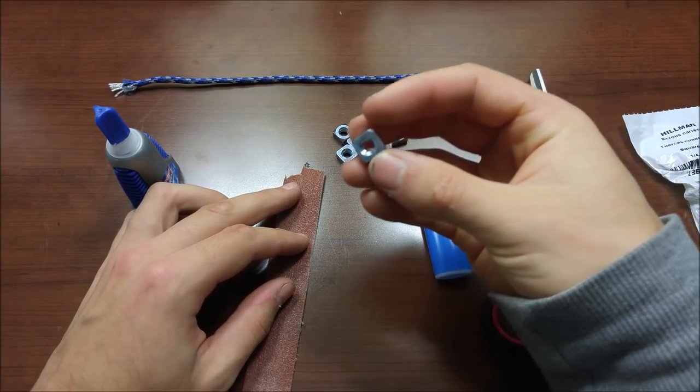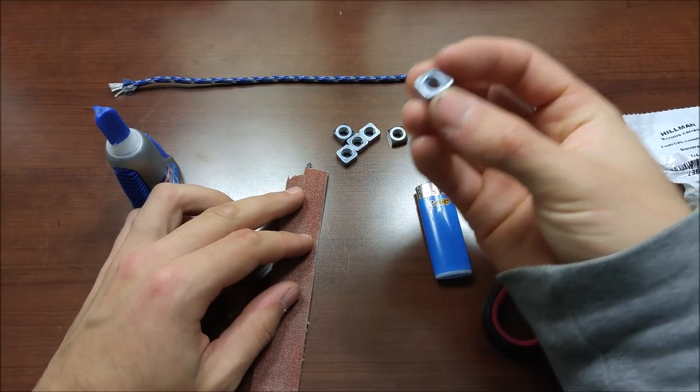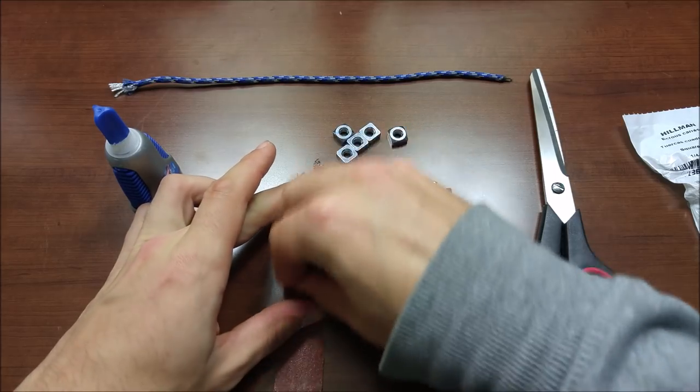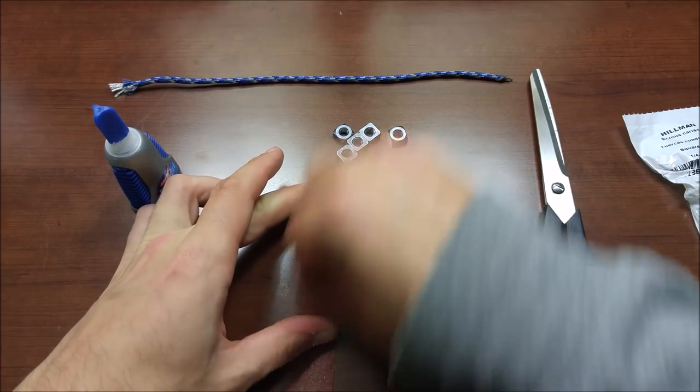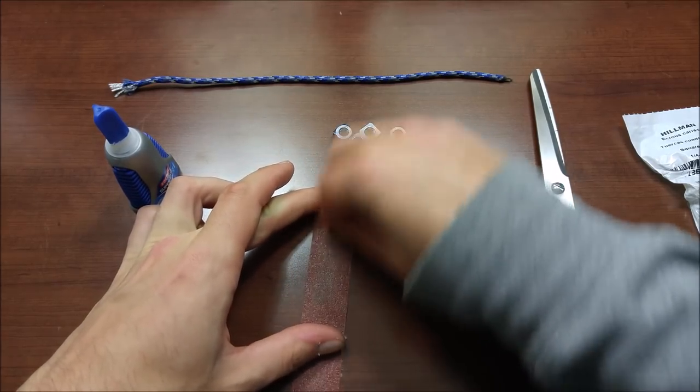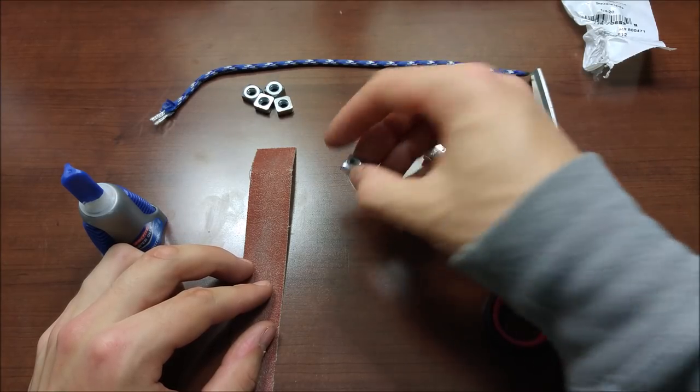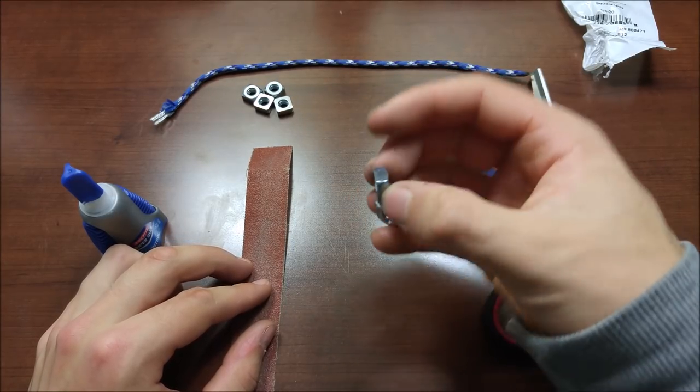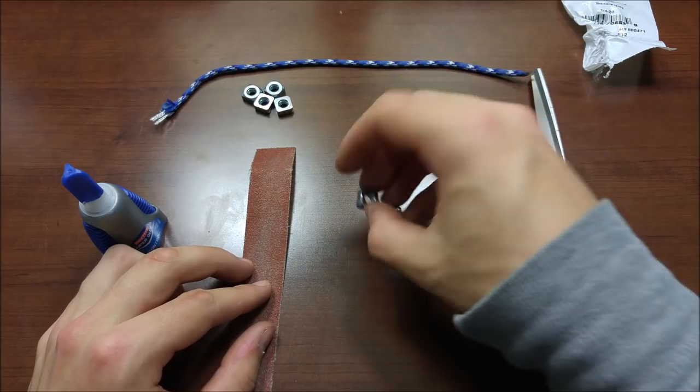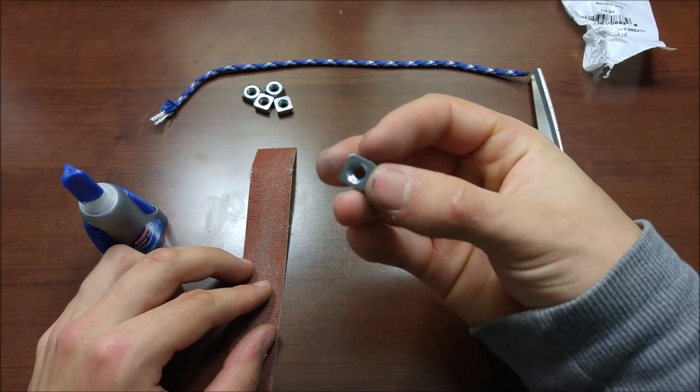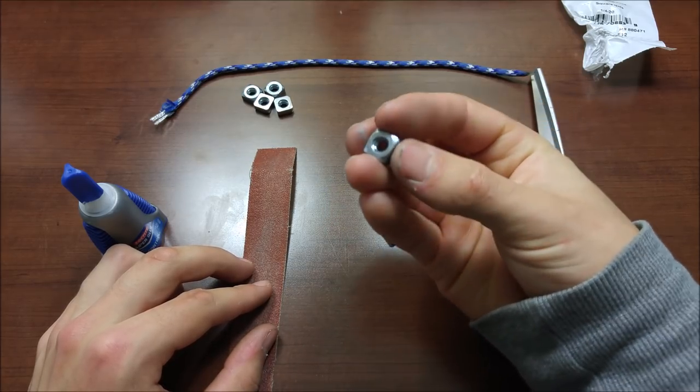To get started, I'm going to rough up one face of each nut. I am then going to take two of the nuts and rough up the opposite face as well. These will be the middle nut in our stack, and this roughing up process will give the glue better purchase.